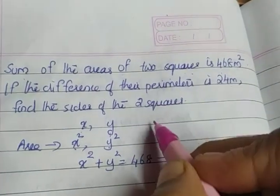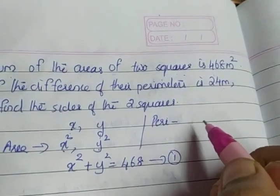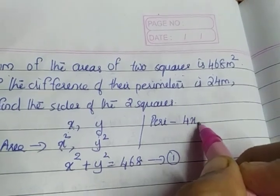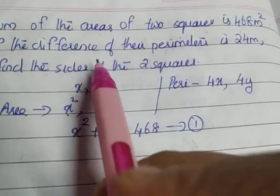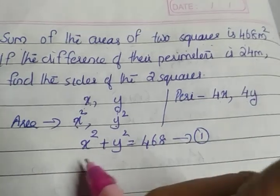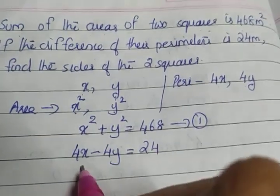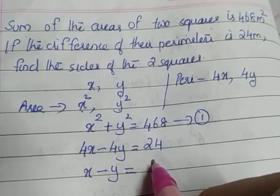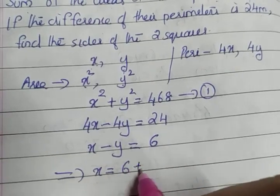The formula for the perimeter of a square is 4 times the side. So the perimeter of the first square is 4x and the second is 4y. The difference of their perimeters gives us 4x minus 4y equals 24. Dividing throughout by 4, we get x minus y equals 6.